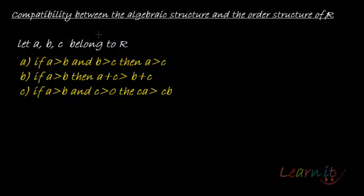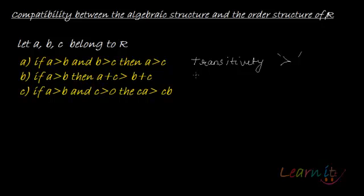Let A, B, C be certain real numbers. Then we claim that if A is greater than B and B is greater than C, then A should be automatically greater than C. So we are talking about transitivity here, in terms of greater than.